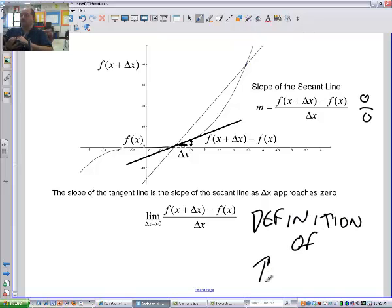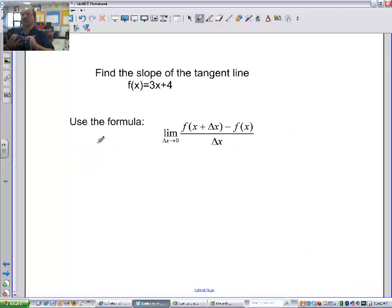Definition of the derivative. There it is. So, I think we're going to try one. So we're going to find the slope of the tangent line to the f of x, which is equal to 3x plus 4, using the definition of the derivative.